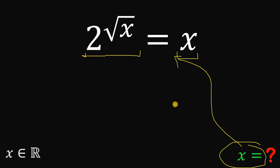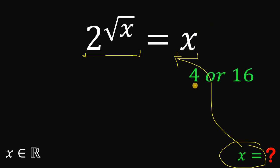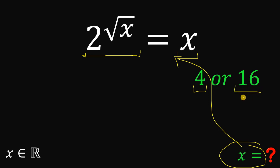Using trial and error, we get two possible values for x, which are 4 or 16. But the question is: do we have an algebraic solution for this kind of question? How do we prove that the only solutions are 4 and 16?